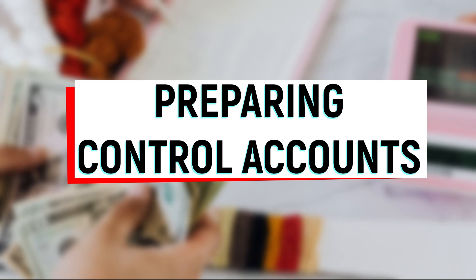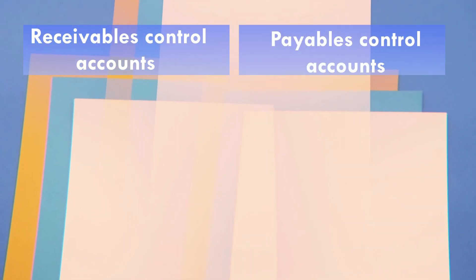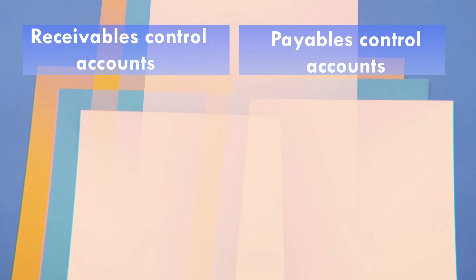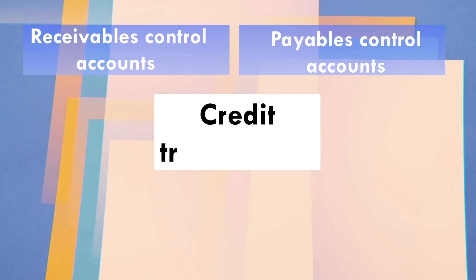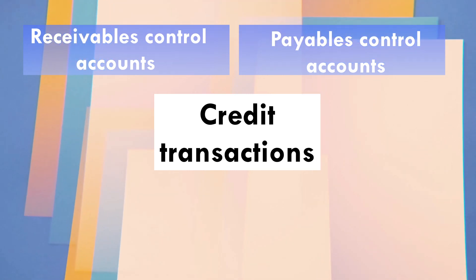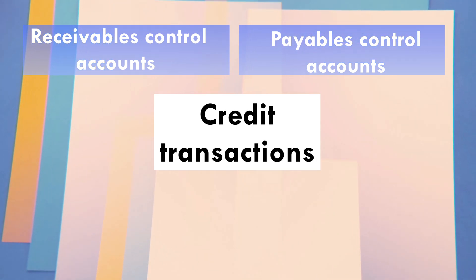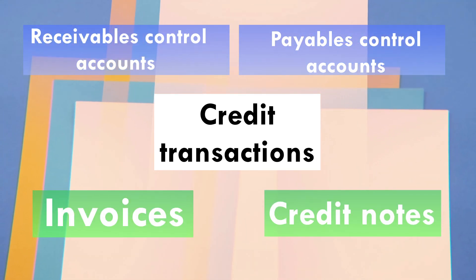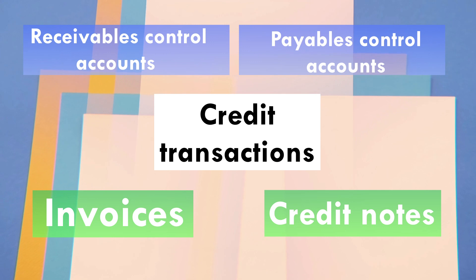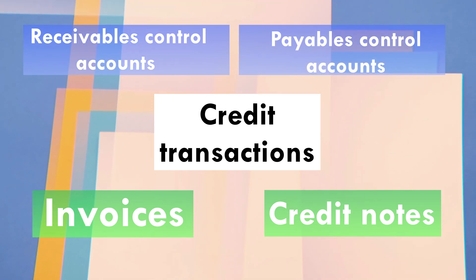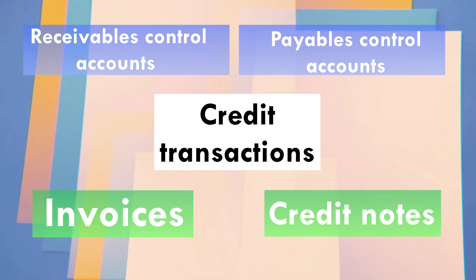This video focuses on two control accounts: the Receivables Control Account and the Payables Control Account. The two accounts deal with credit transactions, where the main source documents are invoices and credit notes. When payments are made, receipts will be issued.